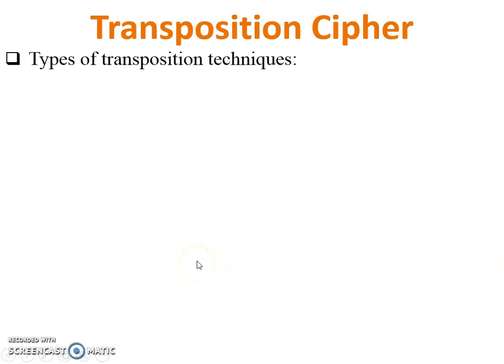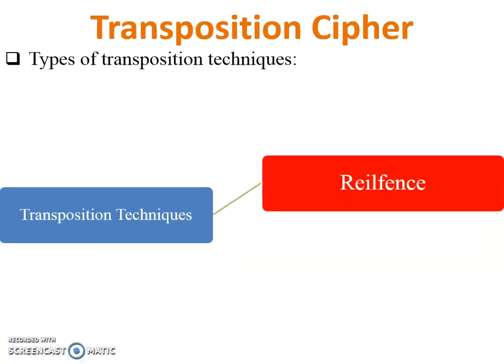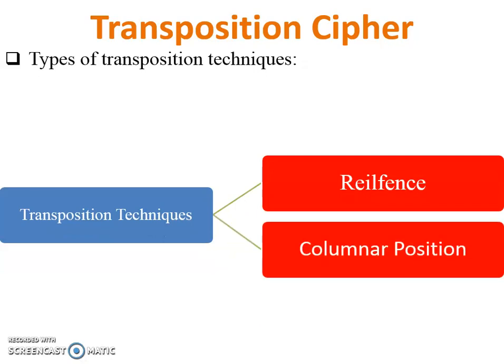Types of Transposition Cipher techniques: the first one is the Rail Fence Technique and the second one is the Columnar Transposition Technique. Today I will teach you the Rail Fence Technique.